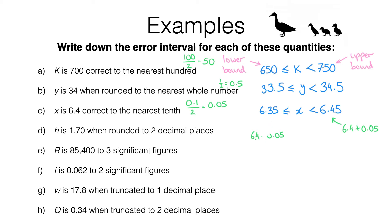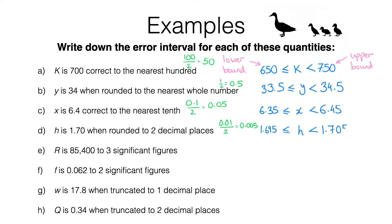For question d, h is 1.70 when rounded to two decimal places. Rounding to two decimal places means rounding to the nearest hundredth. Taking a hundredth and halving it gives 0.005. Subtracting that from 1.70 gives the lower bound of 1.695, and adding it gives the upper bound of 1.705. So the error interval for h is 1.695 ≤ h < 1.705.